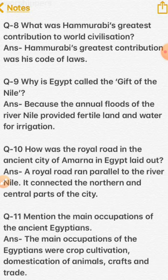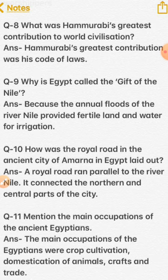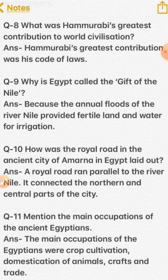Question 8: What was Hammurabi's greatest contribution to world civilization? Answer: Hammurabi's greatest contribution was his code of law. Question 9: Why is Egypt called the 'Gift of the Nile'? Answer: Because the annual flood of the River Nile provided fertile land and water for irrigation. Question 10: How was the royal road in the ancient city of Amarna laid out? Answer: A royal road ran parallel to the River Nile and connected the northern and central parts of the city. Question 11: What were the main occupations of the ancient Egyptians? Answer: Crop cultivation, domestication of animals, crafts, and trade.